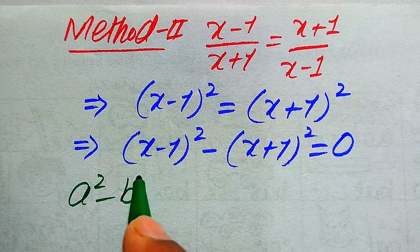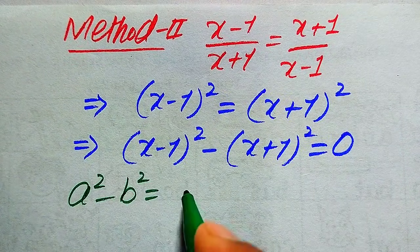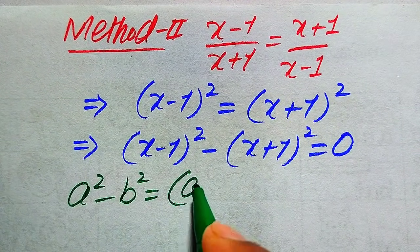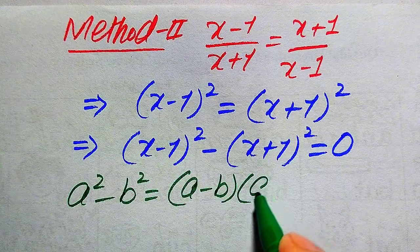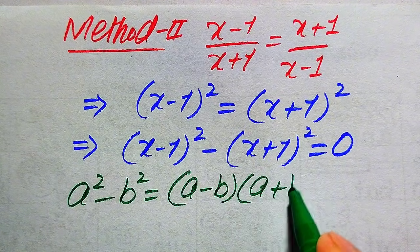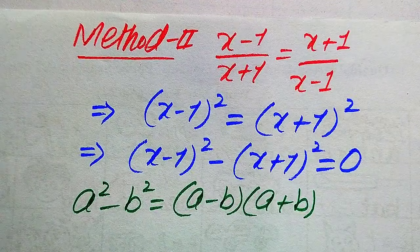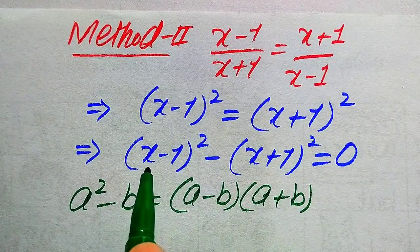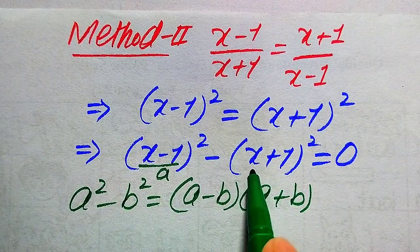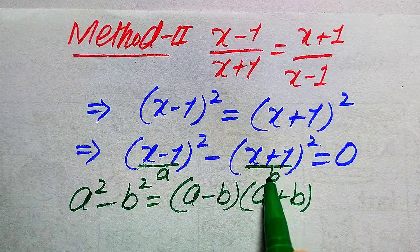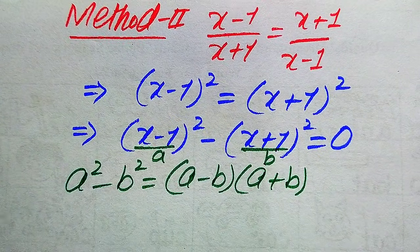Here we use another algebraic formula: a² - b² = (a - b)(a + b), where the base of the first term is a = (x - 1) and the base of the second term is b = (x + 1).